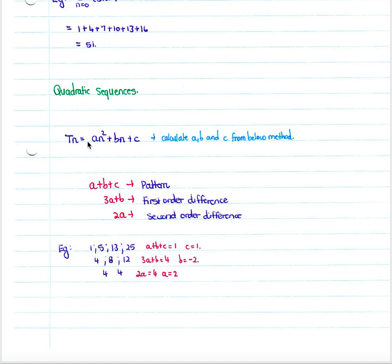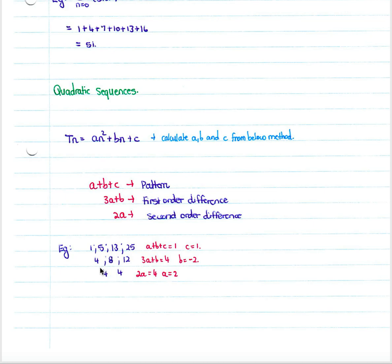For example, given the sequence 1, 5, 13, 25, you calculate the first order differences between consecutive terms: 4, 8, 12. You then calculate the second order differences: 4, 4 — this second order difference is constant throughout. The pattern gives you: a plus b plus c equals 1 (first term), 3a plus b equals 4 (first order difference), and 2a equals 4 (second order difference). Solving: 2a equals 4, so a equals 2.